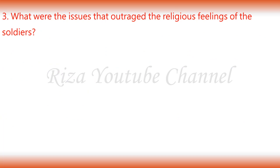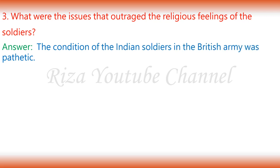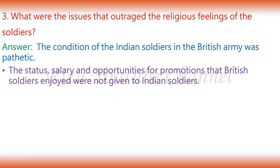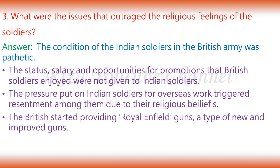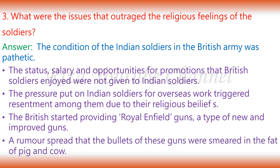3. What were the issues that outraged the religious feelings of the soldiers? The condition of the Indian soldiers in the British army was pathetic. The status, salary and opportunities for promotion that British soldiers enjoyed were not given to Indian soldiers. The pressure put on Indian soldiers for overseas work triggered resentment among them due to their religious beliefs. The British started providing Royal Enfield guns, a new and improved type of gun. A rumour spread that the bullets of these guns were smeared in the fat of pig and cow.